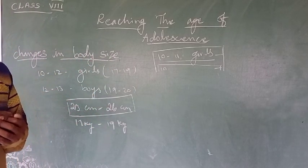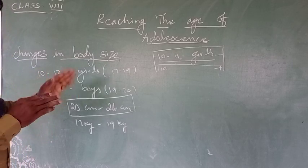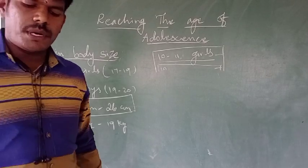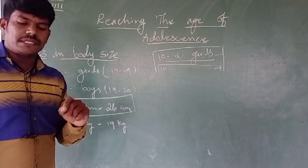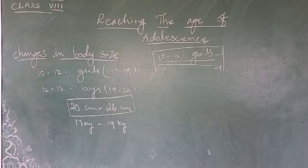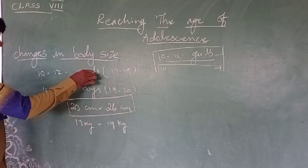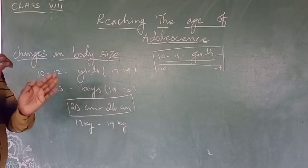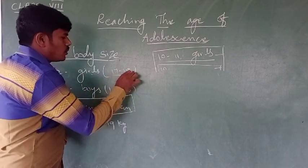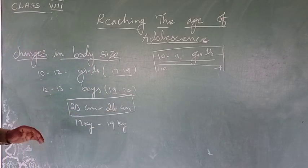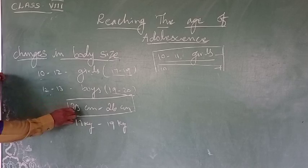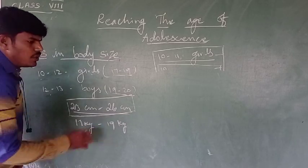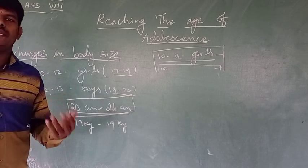During puberty, there are four main changes: change in body size, change in body proportions, development of primary sex characters, and development of secondary sex characters. Height increases by 23 to 26 cm and weight increases by 17 to 19 kg, depending on diet, exercise, and lifestyle.